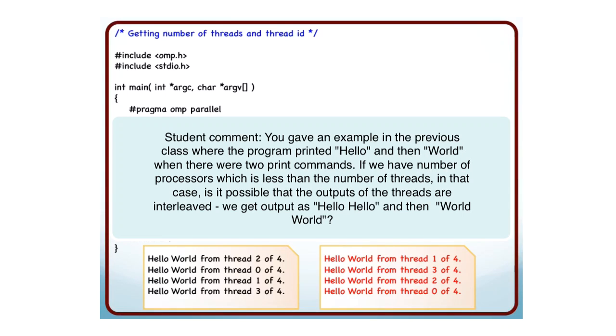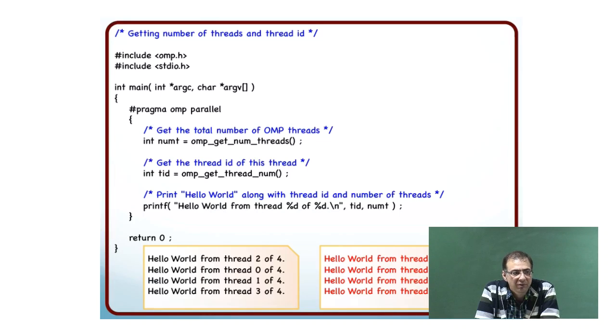So you gave an example that we get hello and then void, two print commands. If we have a similar processor, number of processors which is less than the number of threads, in that case is it possible that the output we get is like hello, hello void, hello etc.? That may even happen when you have separate processors. Even if you have four cores and you are running four threads, you may see that output.